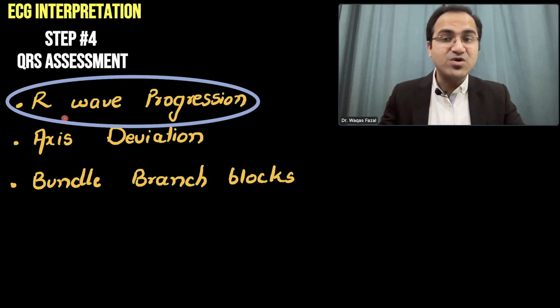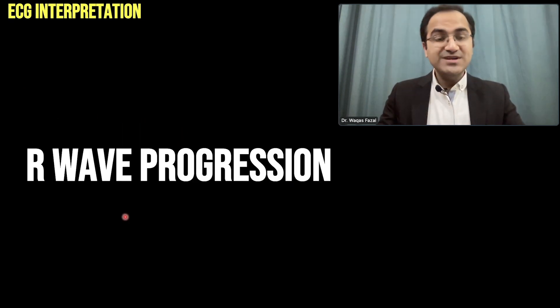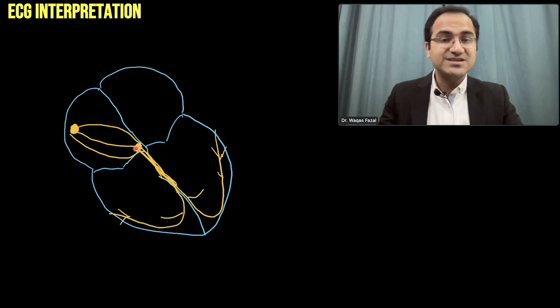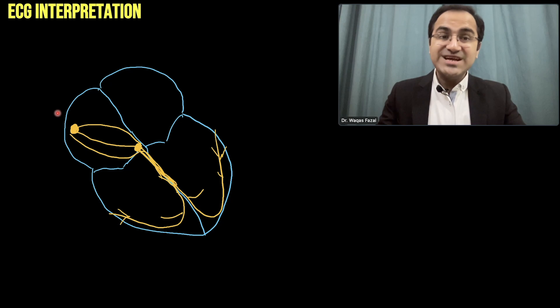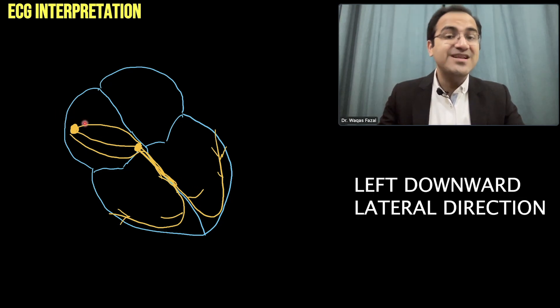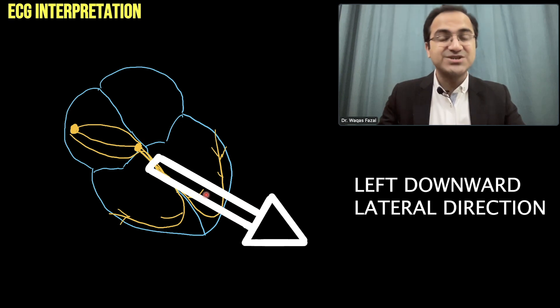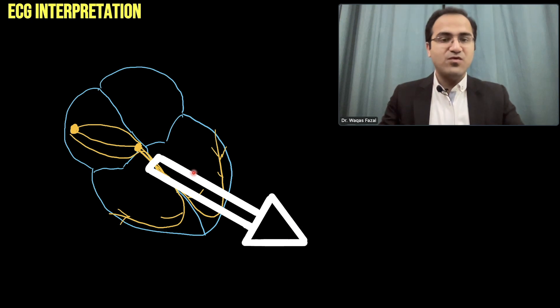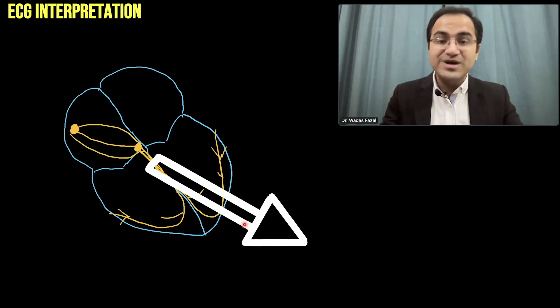In this video we are going to talk about R wave progression — what it is in a 12-lead ECG. Normally the SA node produces electrical currents that spread to the AV node, then to the bundle of His, to the Purkinje fibers, causing contraction of the atria and ventricle. The normal current flow in the heart is in the left, downward, and lateral direction, and if you put a vector of the current flow, that vector will look leftward and downward. In R wave progression, we want to see whether this current is flowing normally in that direction.